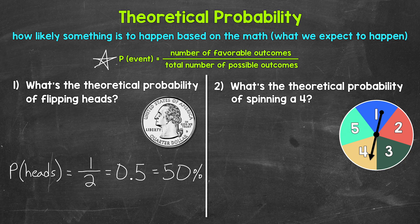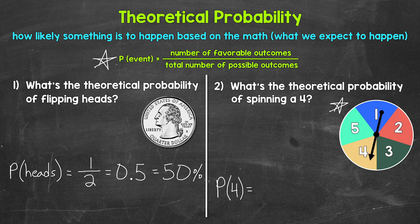Let's move on to number 2: what's the theoretical probability of spinning a 4? If we spin this spinner once, we have an equal chance of landing on 1, 2, 3, 4, or 5. The probability of landing on a 4 equals 1 — there's only one 4 on the spinner — over 5, since there are 5 sections we can land on. So our probability as a fraction is 1 fifth. We have a 1 out of 5 chance of landing on a 4.